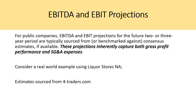For EBITDA and EBIT projections, for public companies these are typically sourced from consensus estimates for the first two to three years if available, as they inherently capture both gross profit performance and SG&A expenses. You can also use equity research projections for EBITDA and EBIT for the first two to three years. You can then find the difference between EBITDA and EBIT to get your depreciation and amortization projection as well.